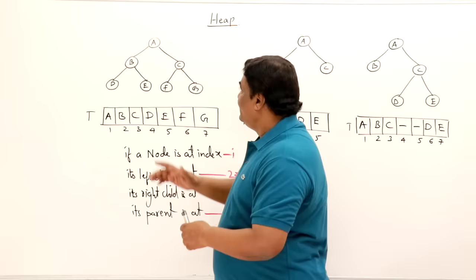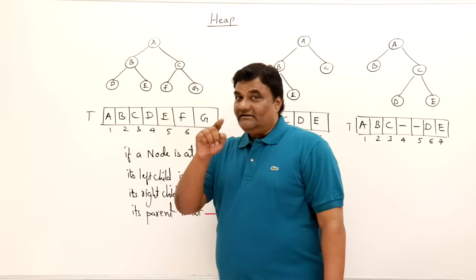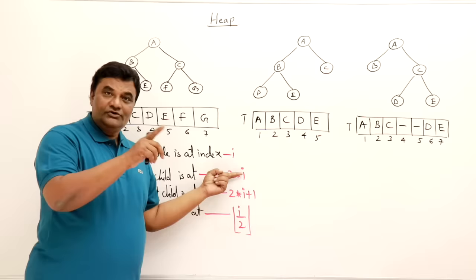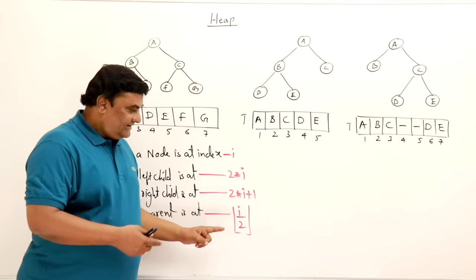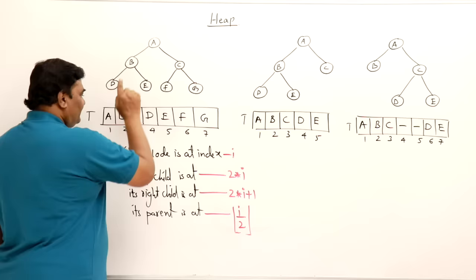The elements A, B, C, D, E, F, G are filled level by level. The relationship between them is preserved using these formulas: if a node is at index i, its left child is at index 2i, its right child is at 2i+1, and its parent is at floor(i/2). Let's verify: B is at index 2, so its left child D should be at 2×2=4 — yes. Its right child E should be at 2×2+1=5 — yes.